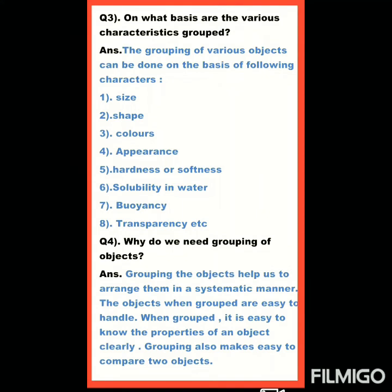Question 3: On what basis are the various objects grouped? कौन से basis पर objects को group करते हैं, कौन सी characteristics होती हैं? Answer: The grouping of various objects can be done on the basis of the following characteristics। जो grouping होती है various objects की वो हम following characteristics के basis पर करते हैं।